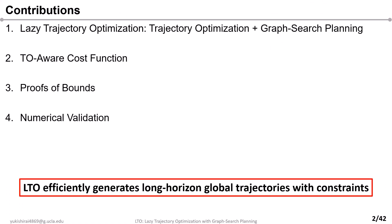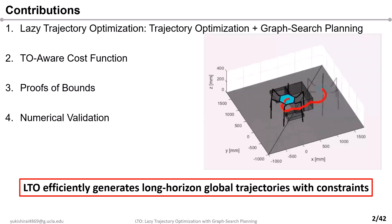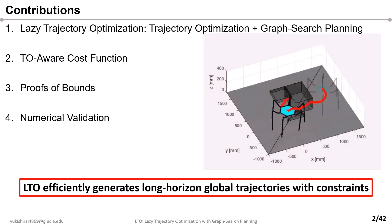Overall, we have four contributions that enable robots to generate long horizon trajectories concerning constraints. Our LTO can even generate trajectories of 21 DOF legged robots under U-shaped obstacles, as shown in this video.